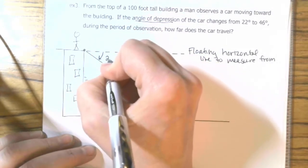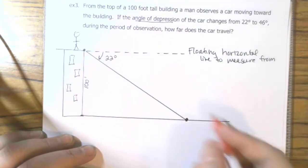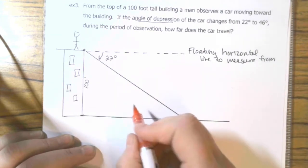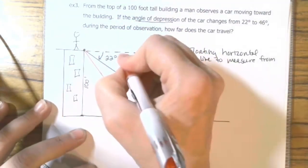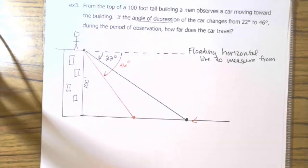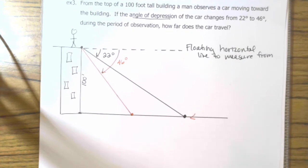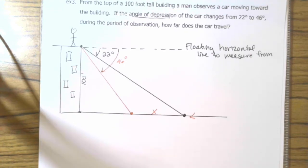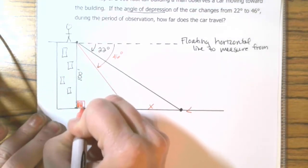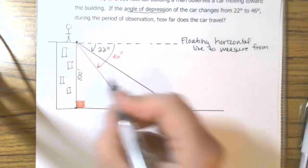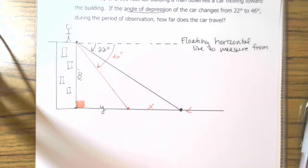So, the angle of depression to the first position was 22 degrees. Then it changed. So, it's going. And remember, the car was going towards the building. So, at some point, it was closer to the building. And the angle of depression changed to 46 degrees. So, we want to know how far does the car travel. So, we're looking for X, which is this distance. We need to know how far it travels. Okay. So, the problem with X is it's not part of a right triangle. So, what we're going to have to do, because we need to incorporate this right angle in any equations that we do, we need to incorporate a different letter. I'm going to incorporate Y so that we have a way to relate this big triangle to this little triangle.